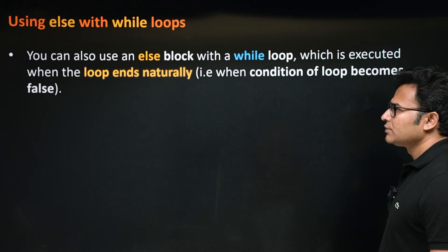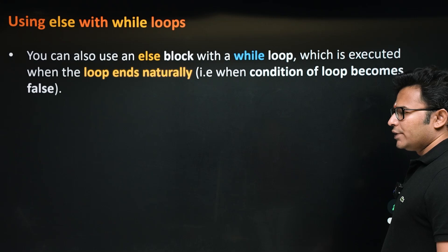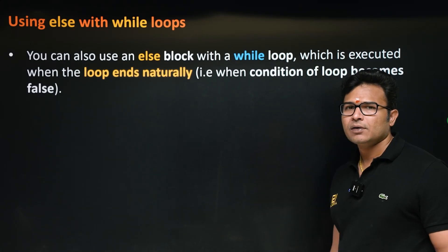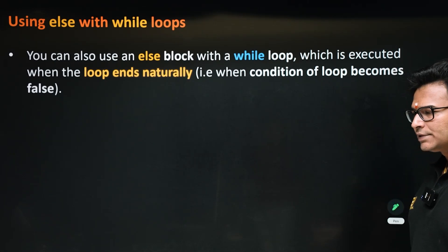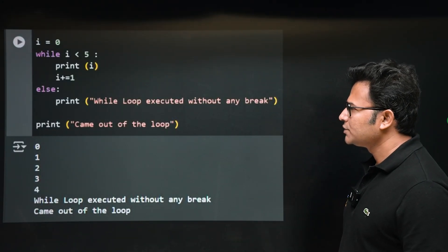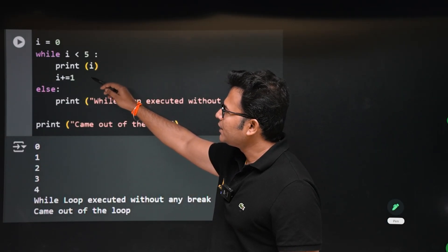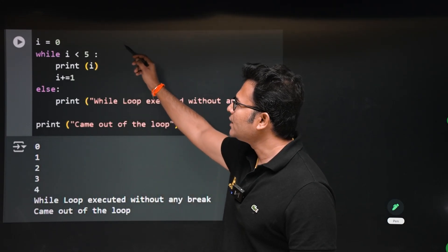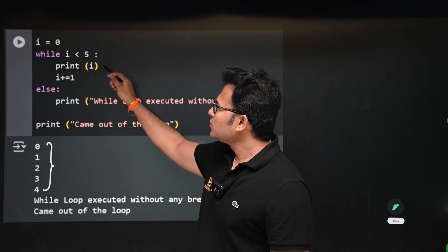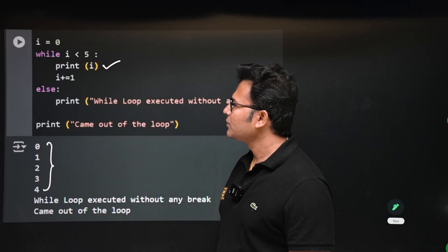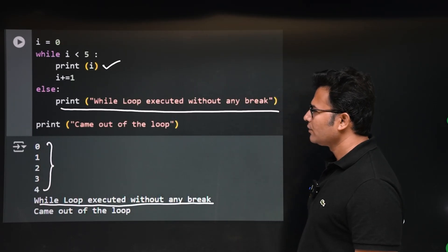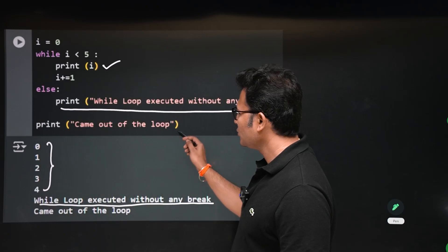You can also use else with the while loop, just like with the for loop. The else block gets executed whenever the while loop exits naturally. For example: i equal to 0, while i less than 5, print i, i plus 1 — there is no break, so it exits naturally. Zero to four are printed, and when it exits naturally the else part is printed: 'while loop executed without any break'. Both for and while have else statements.